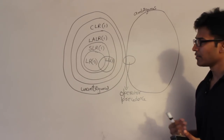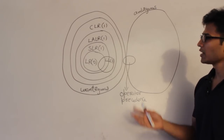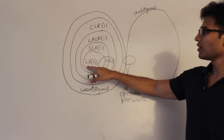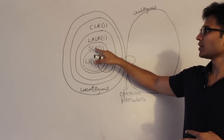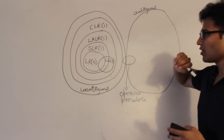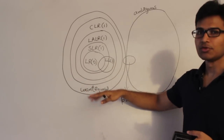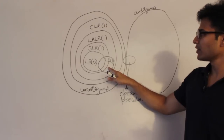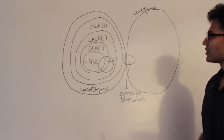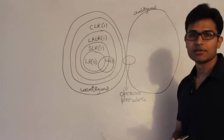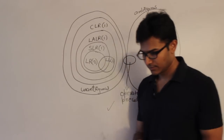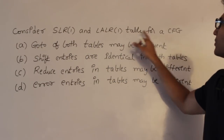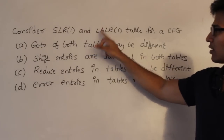Typical exam questions involve relationships among table sizes and the types of shift, reduce, and error entries. For example: if a grammar is LR0, is it definitely SLR1? Yes. Definitely LALR1? Yes. Definitely CLR1? Yes. If a grammar is LL1, it is definitely LALR1 because LL1 is completely included in LALR1.